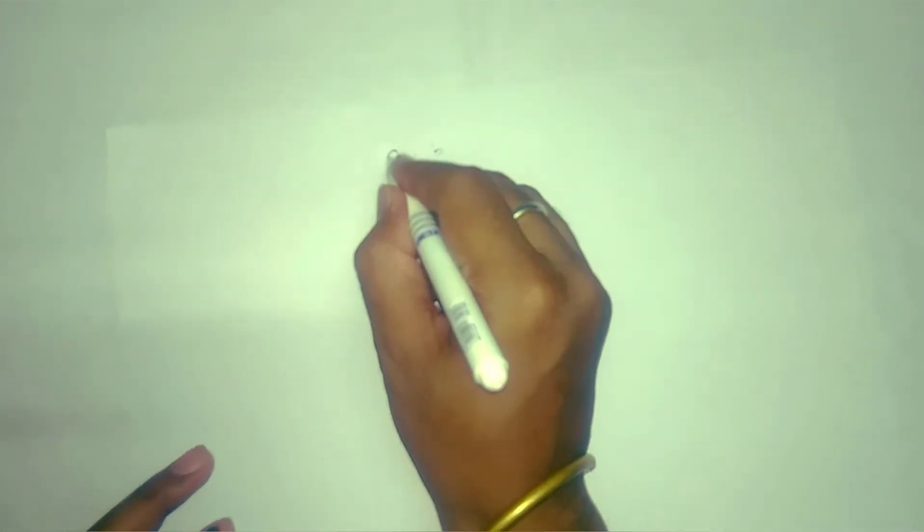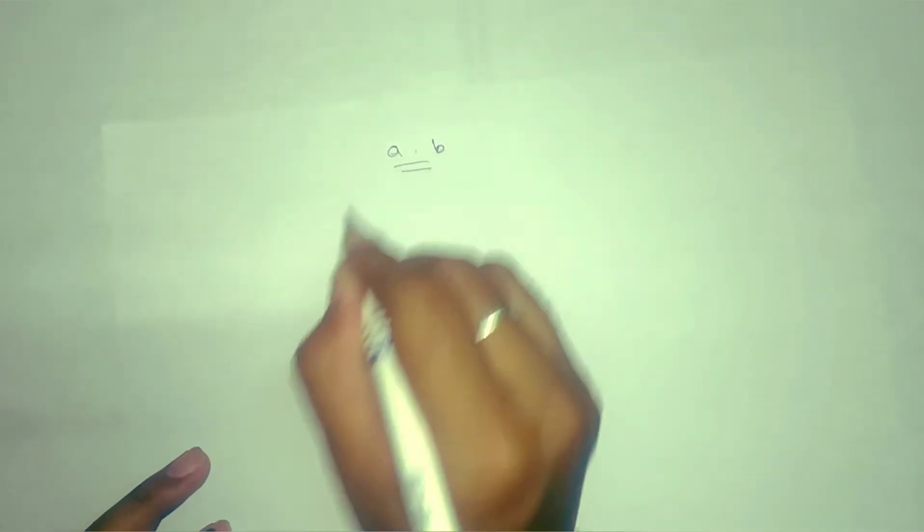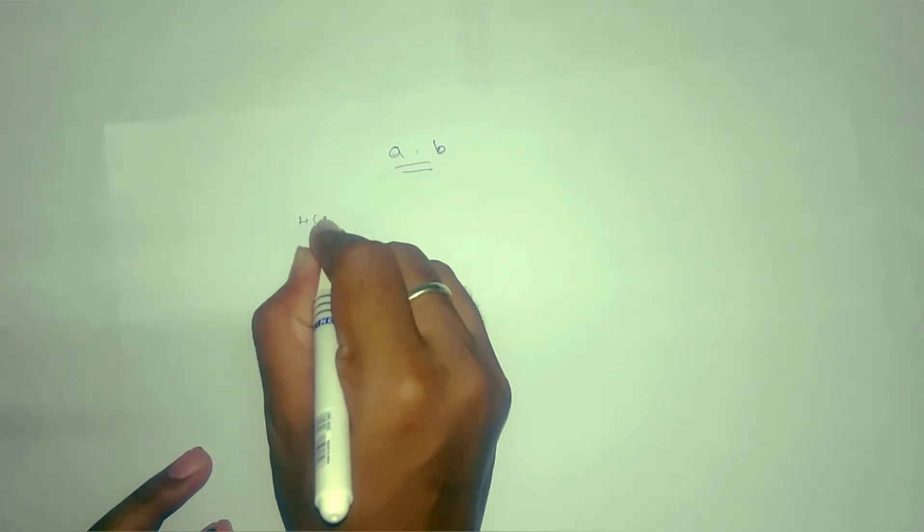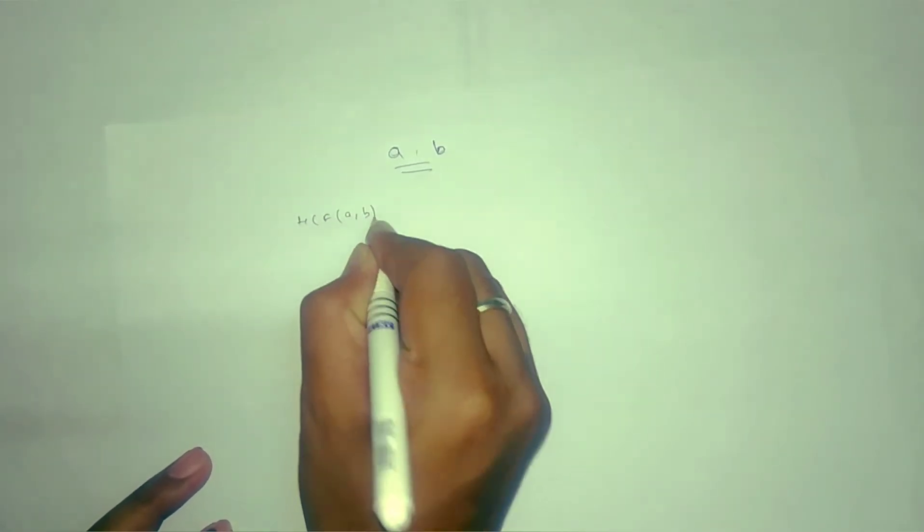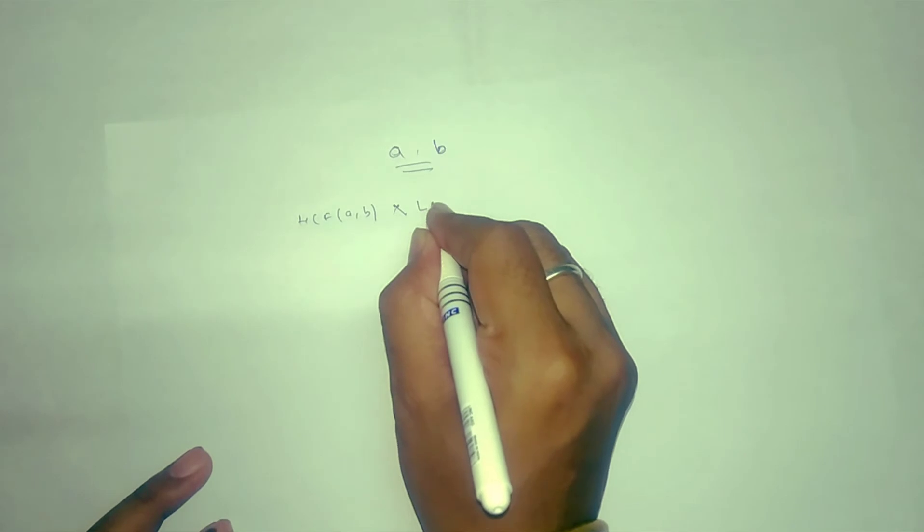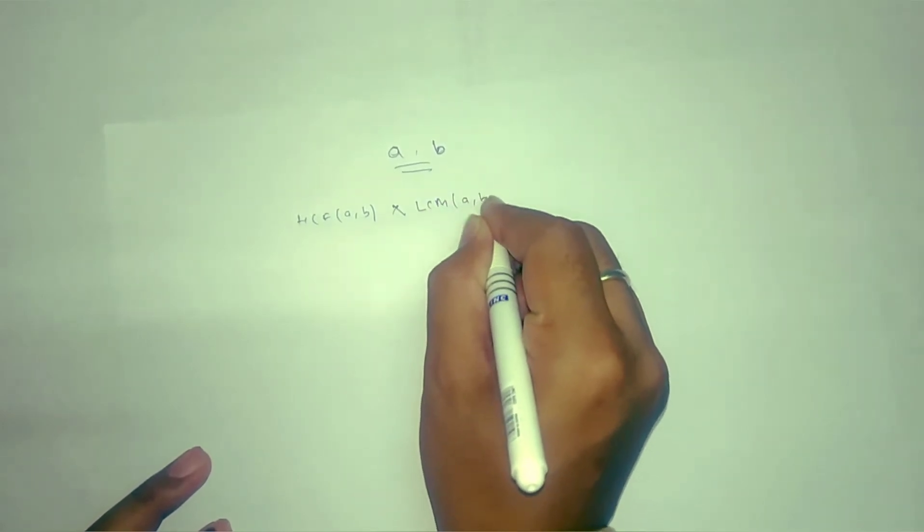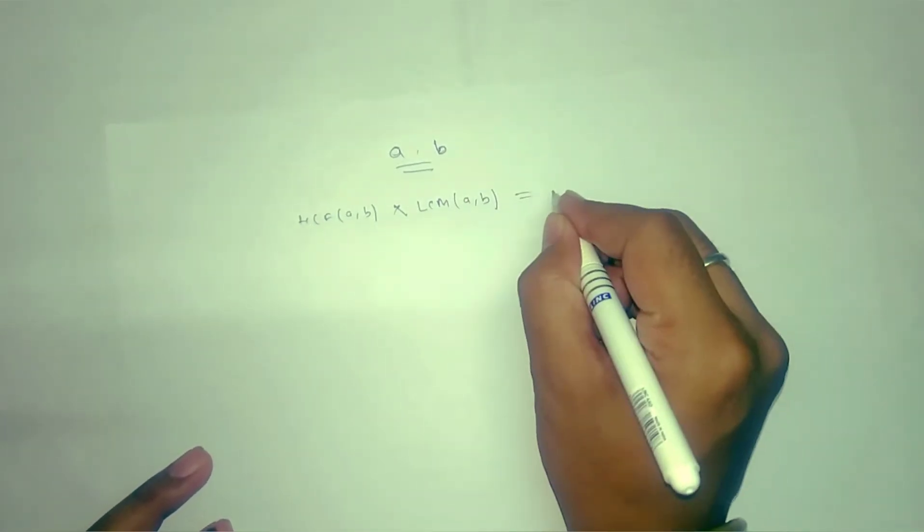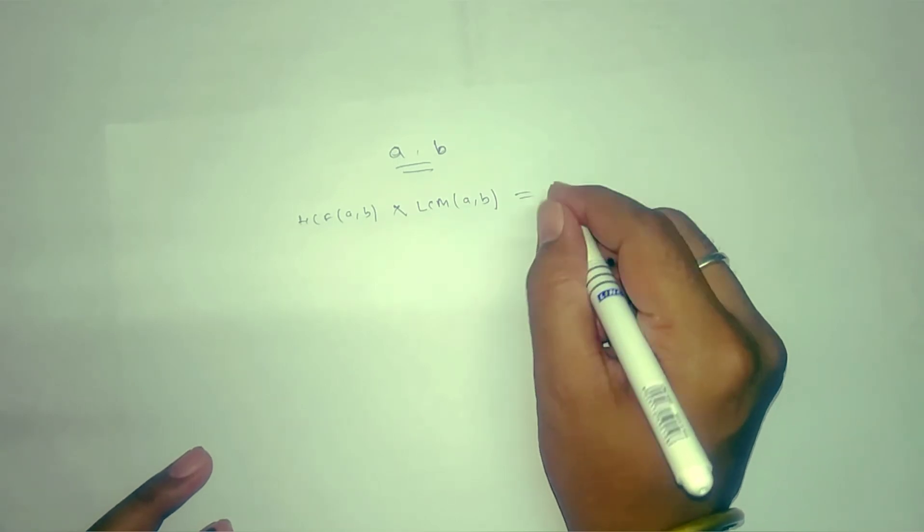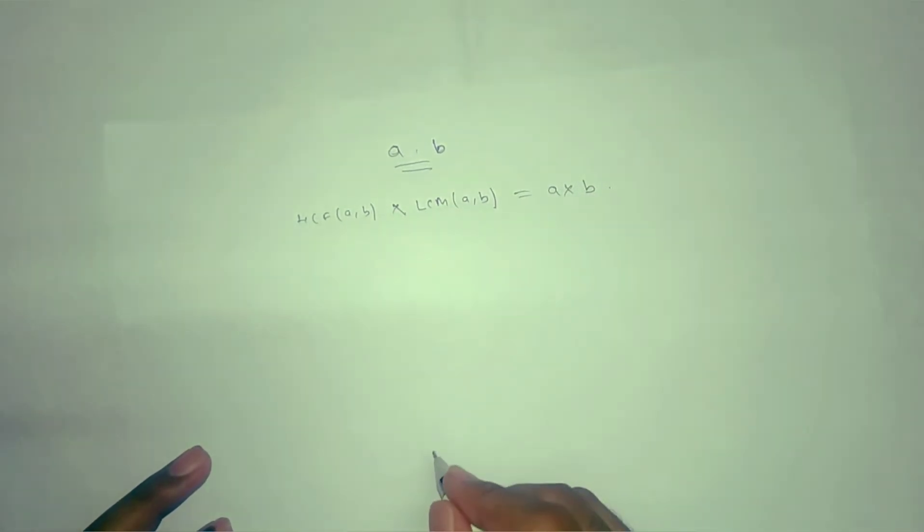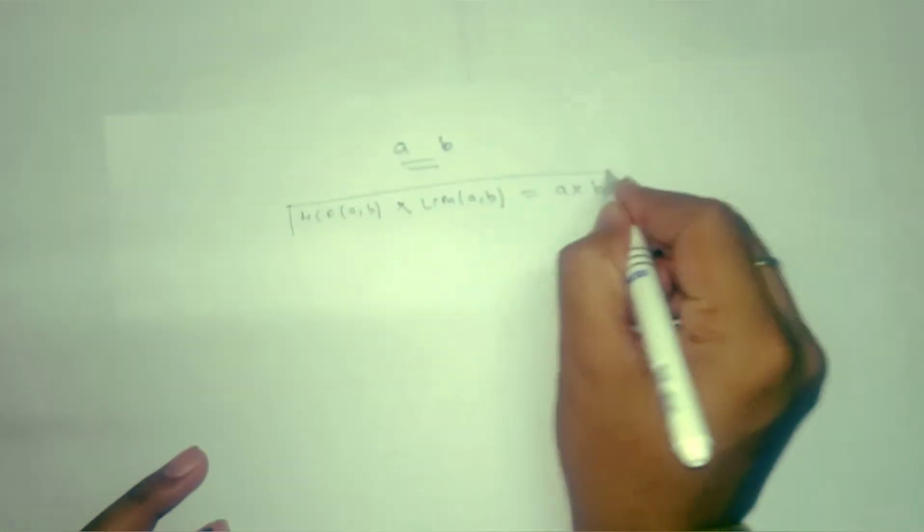Namaste students, today we are going to see the relationship between LCM, HCF, and two numbers. If we take two numbers a and b, find the HCF of a, b and multiply it with LCM of a, b, then you will get the result that is the product of a times b. This is the formula we are going to see.